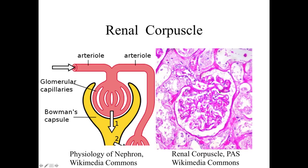Looking at an artist's rendition alongside a periodic acid-Schiff histological specimen, we can see an artery coming in — one afferent arteriole and one efferent arteriole. The efferent is usually smaller because fluid and materials are squeezed out as blood passes through the glomerular capillary bed. We've got a very rich, fenestrated capillary bed, podocytes as the inner layer of Bowman's capsule with their inner digitations forming the filtration barrier, squeezing small molecules and fluid into the urinary space. We've got the outer region of Bowman's capsule, the vascular pole, and proximal tubules receiving the filtrate. That's essentially the renal corpuscle as a filtering mechanism.